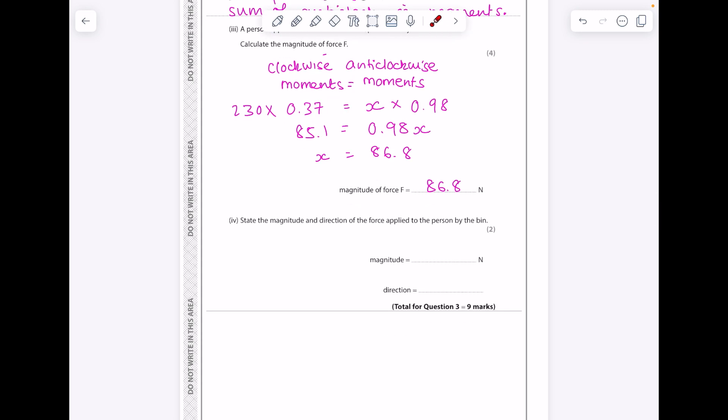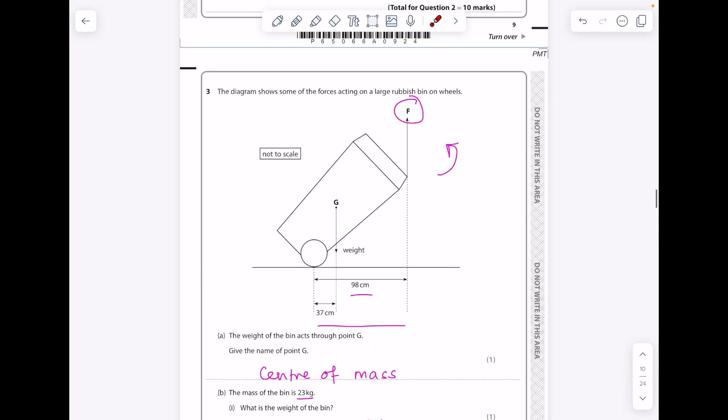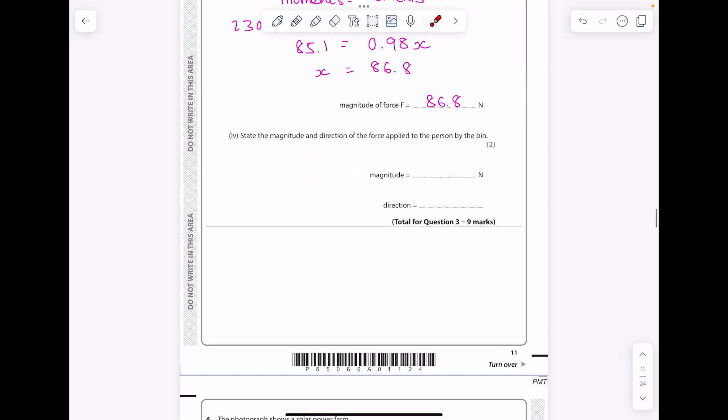State the magnitude and direction of the force applied to the person by the bin. The person is standing here holding the bin, so that force is going to be applied by the bin downwards, and it will be the same value, so 86.8, and our direction is downwards.